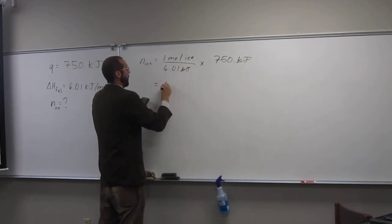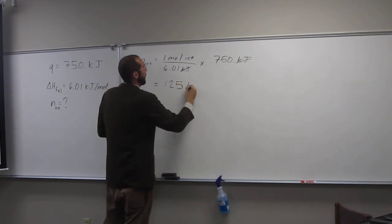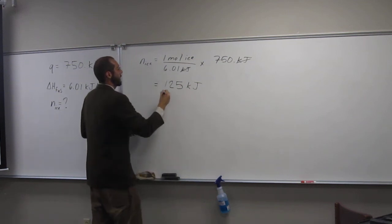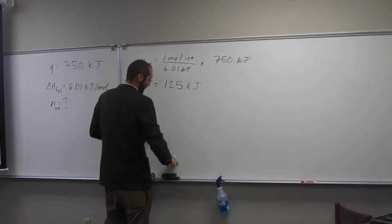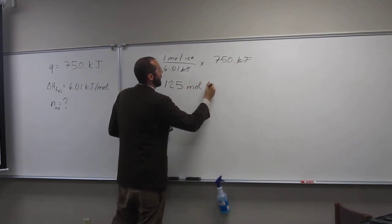So 125, I guess, kilojoules. Okay, so that's how much—oops, no, kilojoules. Sorry. 125 moles of ice.